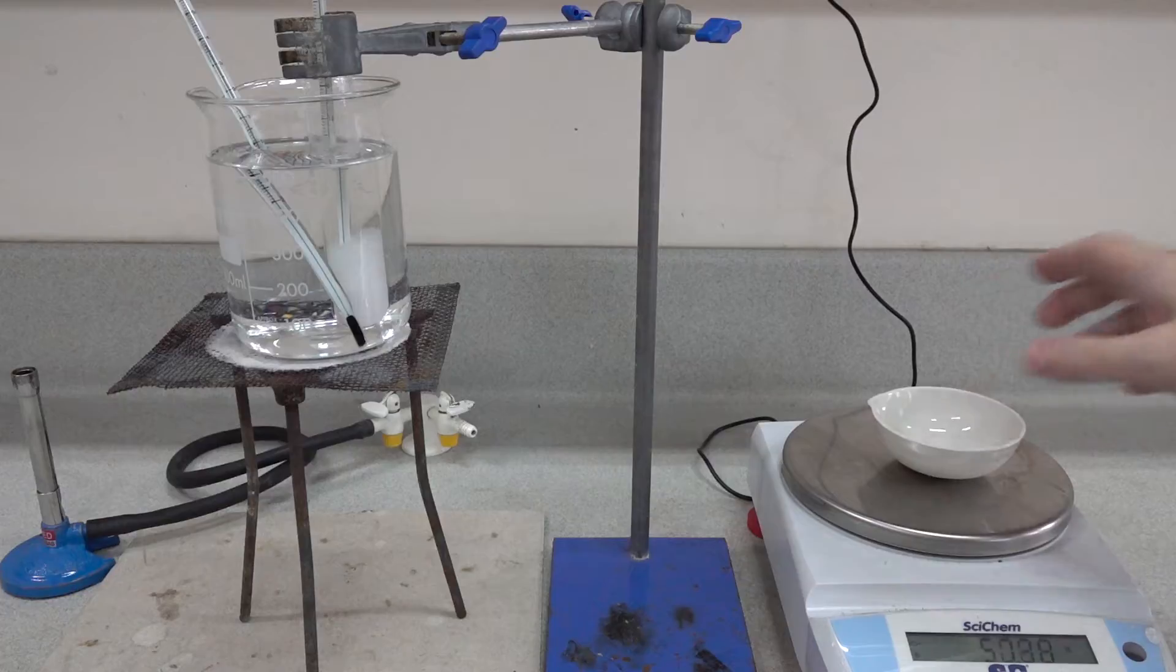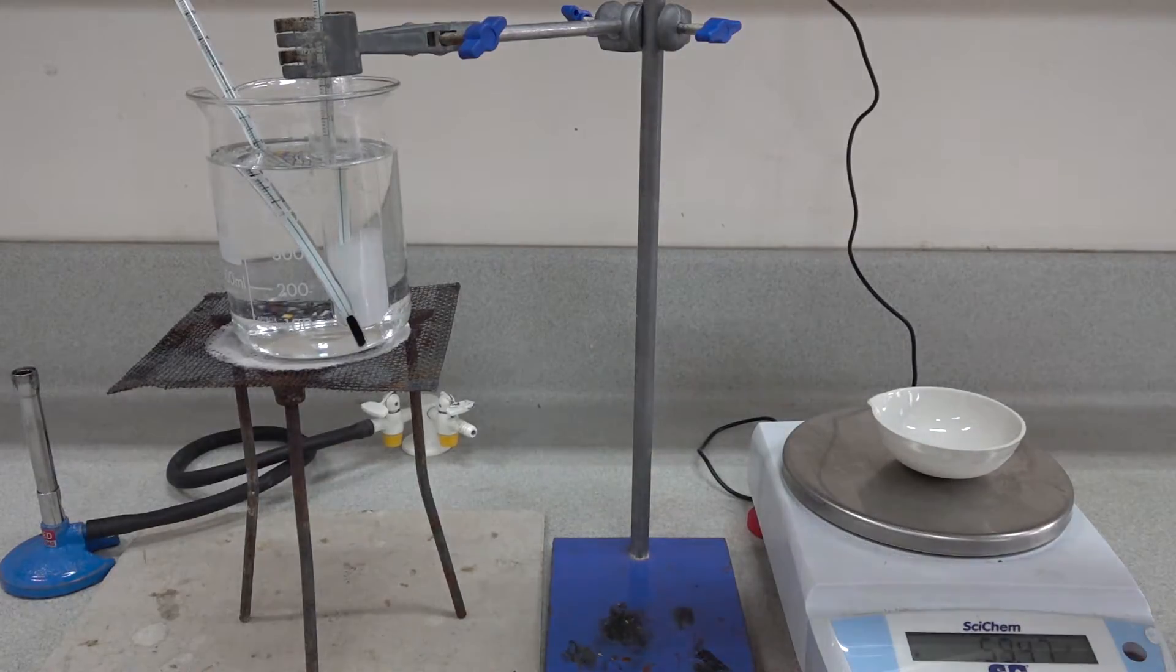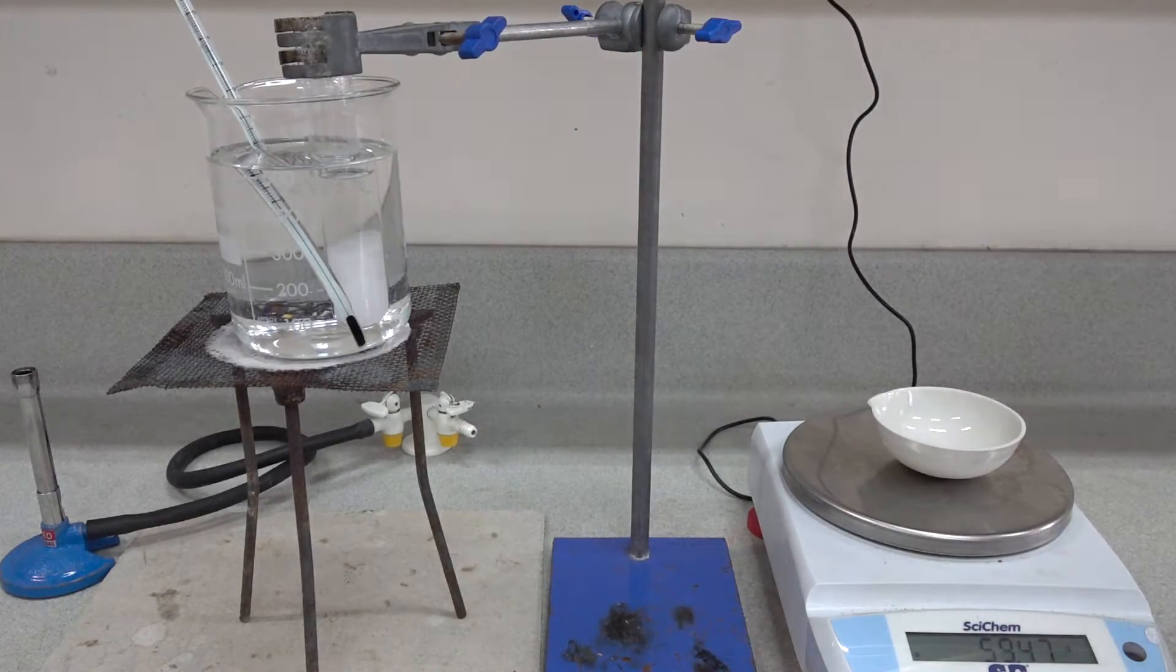So with this procedure we weigh an empty evaporating basin, that's 59.47 grams, and into that we need to place some of the potassium nitrate solution that's at 40 degrees C.